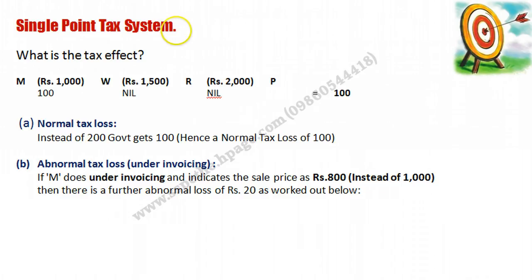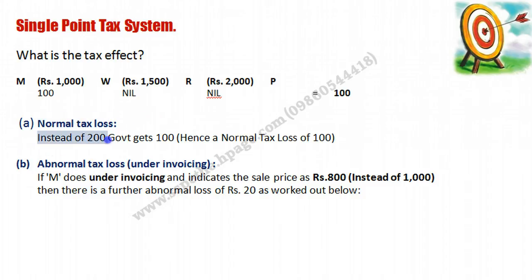Now we will see the systems in detail, as in exams they can ask you to write a short note on systems like Single Point Tax. The tax effect: the government will be able to recover Rs. 100 only in Single Point Tax. There will be two losses to the government. First is Normal Tax Loss — instead of Rs. 200, the government gets just Rs. 100, so there is a normal tax loss of Rs. 100. Second is Abnormal Tax Loss — there are chances of under-invoicing, which causes additional loss to the government.